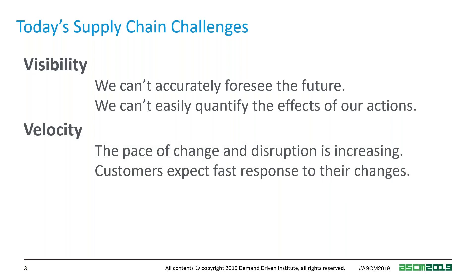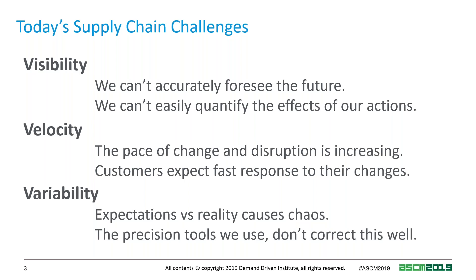I don't think there's anybody who thinks the pace of change is decreasing — disruption has become a constant. All customers are expecting fast responses when they make a change. And then there's variability. When expectations meet reality and we compare those, chaos is the result. We're using precision tools and they don't handle that very well. When your forecast was for 100 and you needed 98 or 102, some chaos is created. Sometimes a customer places an order and then wants it on a different date.